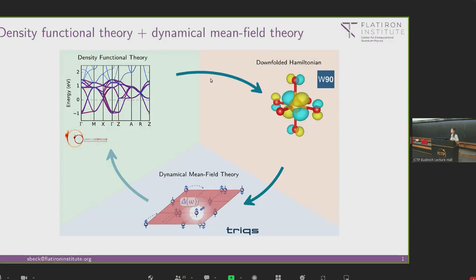This is to give you a broad overview of what DFT plus DMFT means. DFT plus DMFT stands on three pillars: density functional theory, then a downfolded Hamiltonian which we use Wannier90 for, and then the DMFT part. I want to thank all the developers and inventors of Wannier90 for their work, because without it, this method would not work as it does right now.